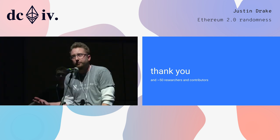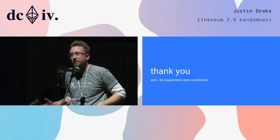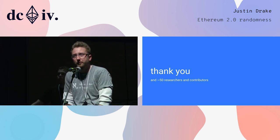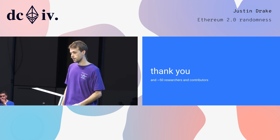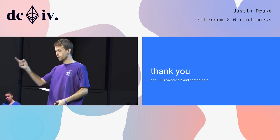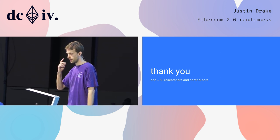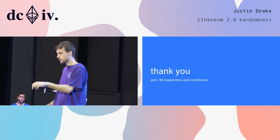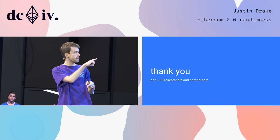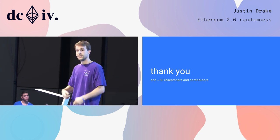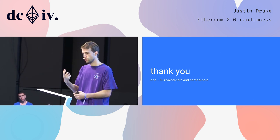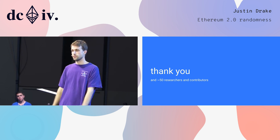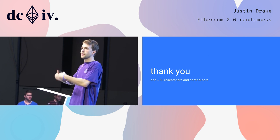Question about what happens if all VDF rigs go offline: if the randomness doesn't come on-chain soon enough — which should not happen, but in some exceptional condition — we fall back on RANDAO. At the application layer, things are actually better: through the opcode, you specify the epoch, and it will return either no randomness — all zeros — or the randomness. You can design your application to retry until it eventually gets the randomness.